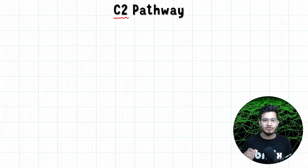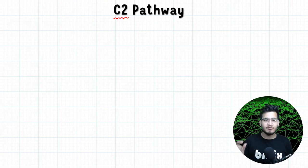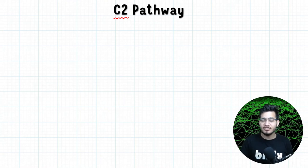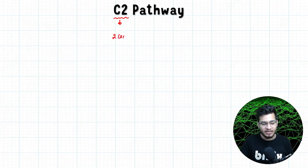The C4 pathway is called C4 because its first stable product has 4 carbons, and that stable product is OAA — oxaloacetic acid. Similarly, this is called the C2 pathway because here a 2-carbon product is formed, which we call phosphoglycolate.